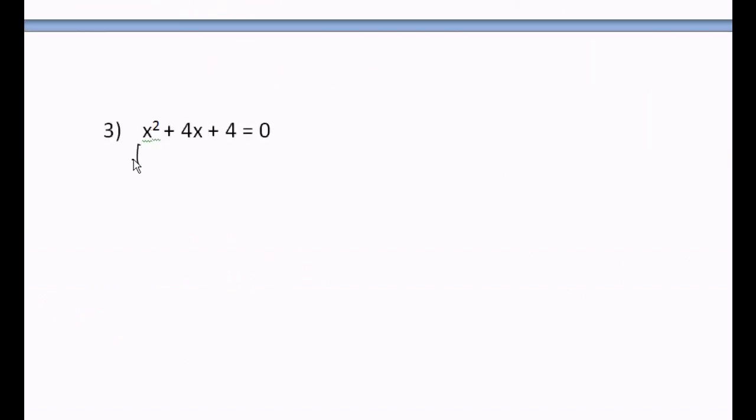A equals 1, B equals 4, and C equals 4. The formula was b squared minus 4 times a times c.